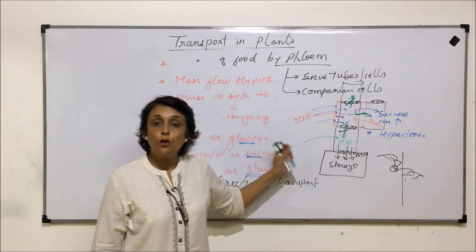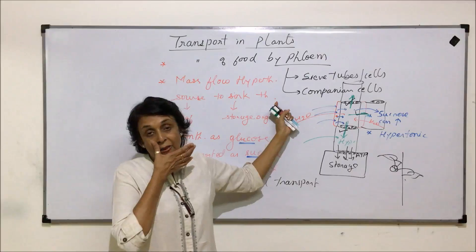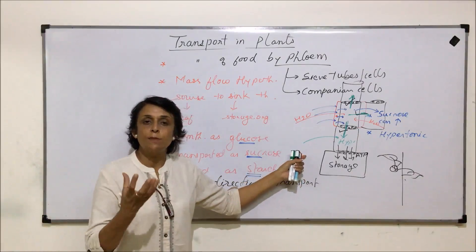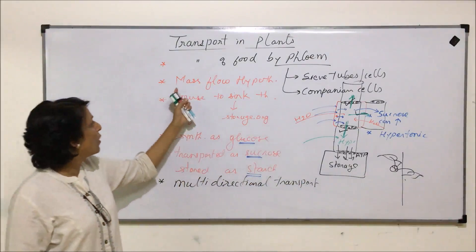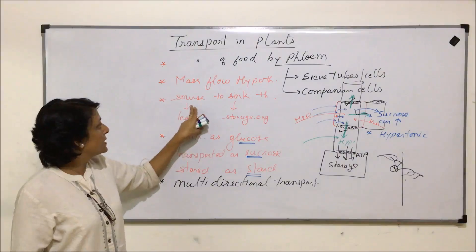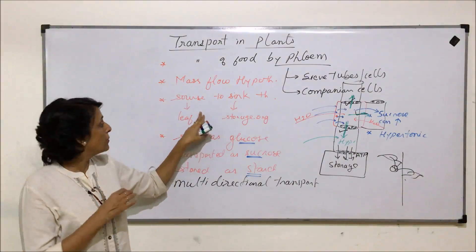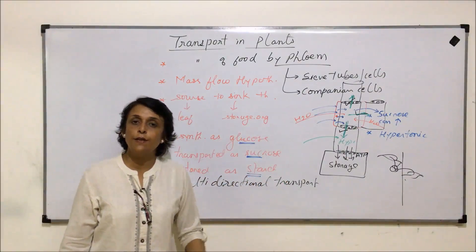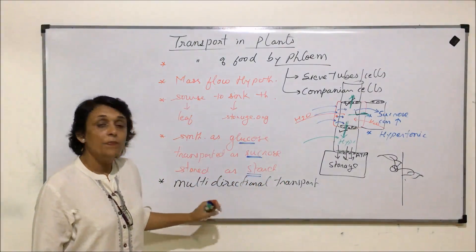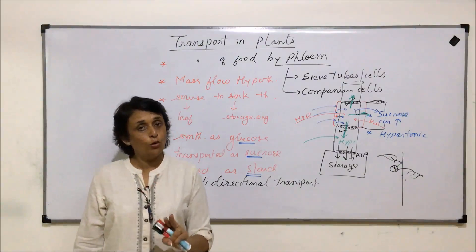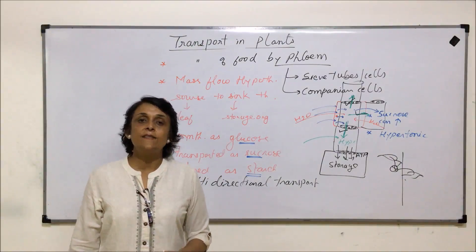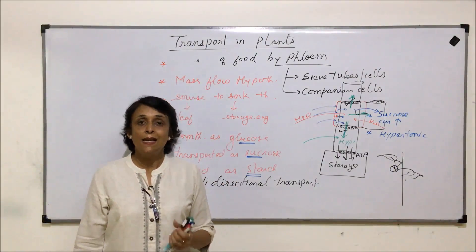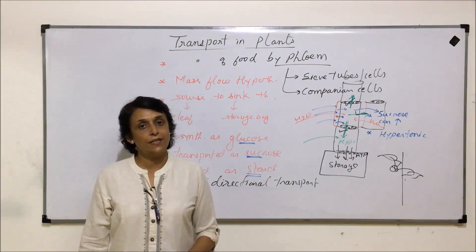So movement of food takes place through phloem and it is multidirectional because it is pressure-related. This movement takes place in bulk and that is why we call it mass flow hypothesis. It is explained using the principle of source to sink — from where it is synthesized to wherever it has to be stored. This completes the movement of both water and food in plants, so our chapter on transport in plants is complete. We will take up the next chapter in the next videos.